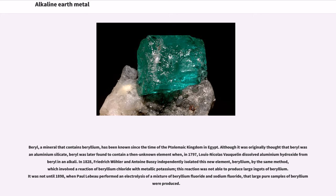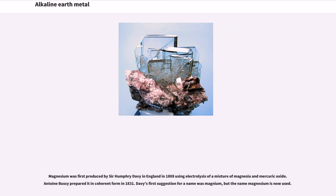This reaction was not able to produce large ingots of beryllium. It was not until 1898, when Paul LeBeau performed an electrolysis of a mixture of beryllium fluoride and sodium fluoride, that large pure samples of beryllium were produced. Magnesium was first produced by Sir Humphrey Davy in England in 1808 using electrolysis of a mixture of magnesia and mercuric oxide. Antoine Bussy prepared it in coherent form in 1831. Davy's first suggestion for a name was magnium, but the name magnesium is now used.